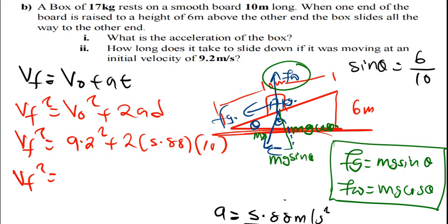So, the V final will be equal to, I'll have 9.2 squared plus open brackets, 2 times 5.88 times 10. Then, I close the brackets. So, I'm getting this to be 202.24. We get the square root. If I get the square root, I'm getting 14.22 meters per second, as my final velocity.